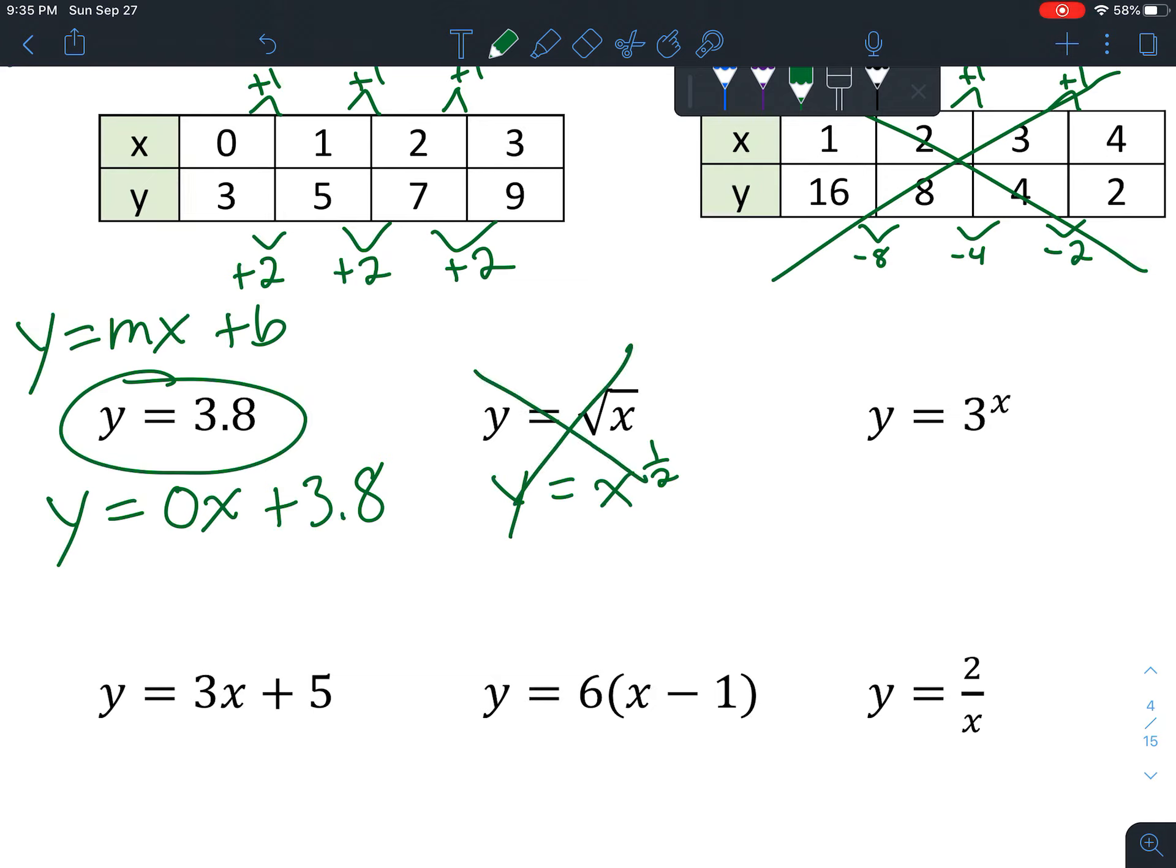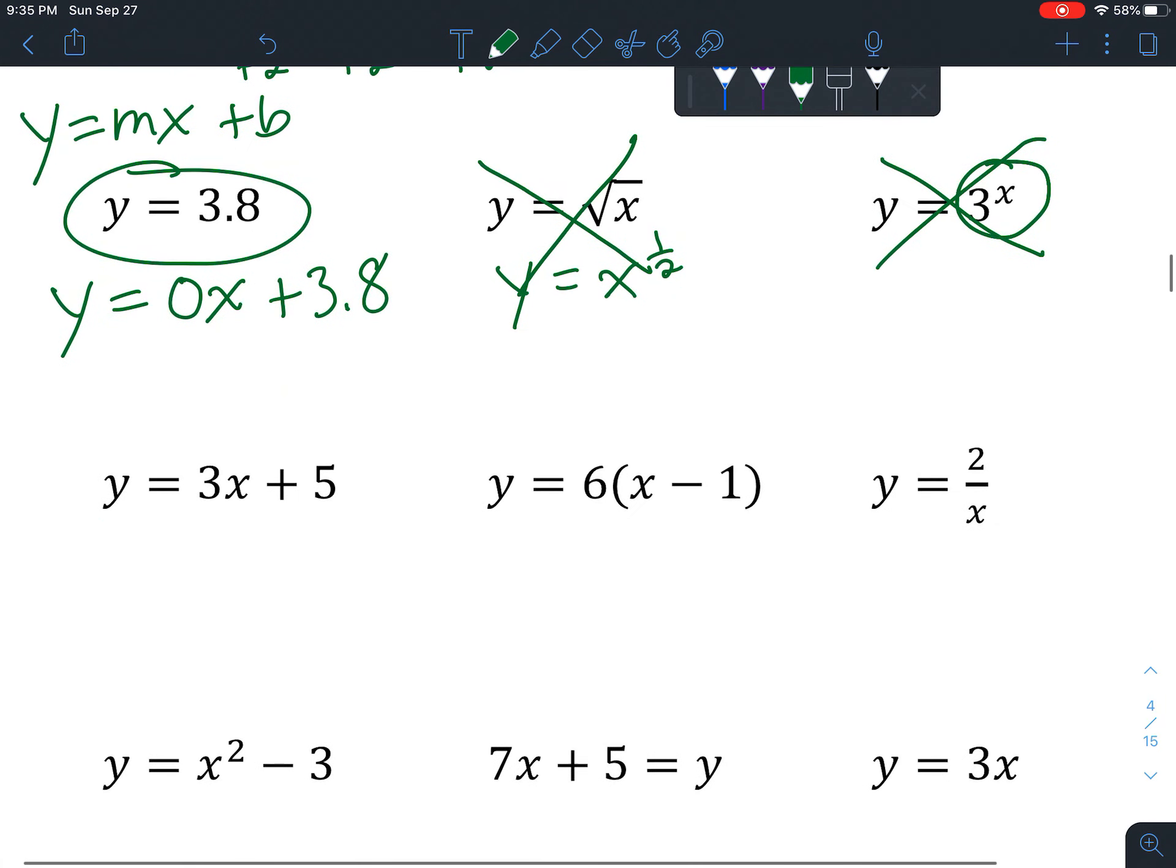That one is not a linear function. Now this one, it's set up exactly how we were saying, y equals mx plus b. It has the same format, so that one is a function without even having to change anything. For this one, let's simplify it a little: 6 times x is 6x, 6 times 1 is 6, and that looks like the right format, so that one is a function.